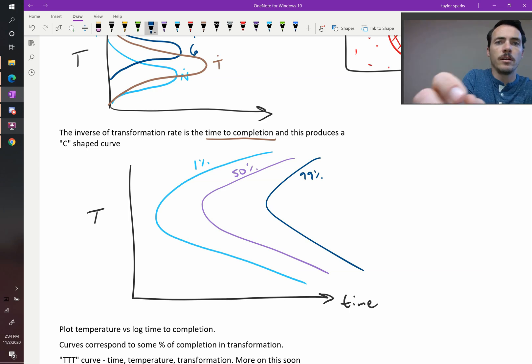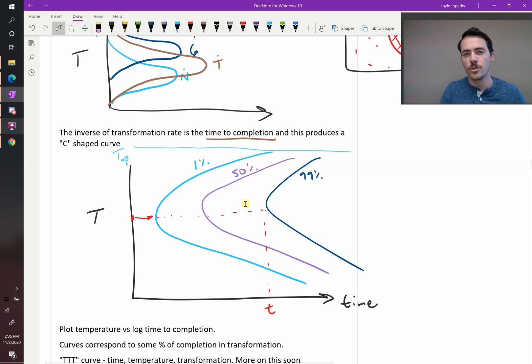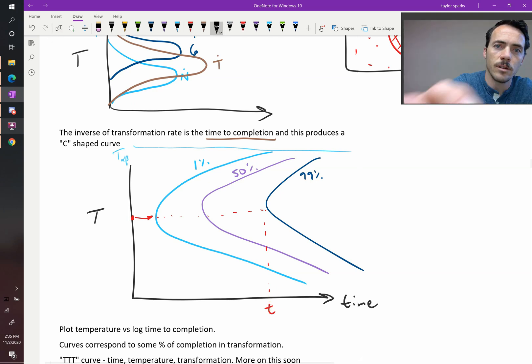What you see is that this is all happening below the temperature that thermodynamics says this should take place at, T alpha beta. And yet, there exists, right here, a temperature where you get your transformation occurring the fastest. At this temperature, you get some time where the fastest transformation takes place. Now, when they do these, this x-axis is in the log scale, so it's actually log of time.